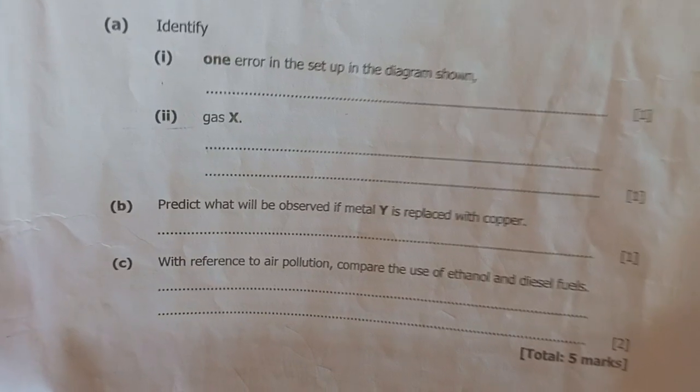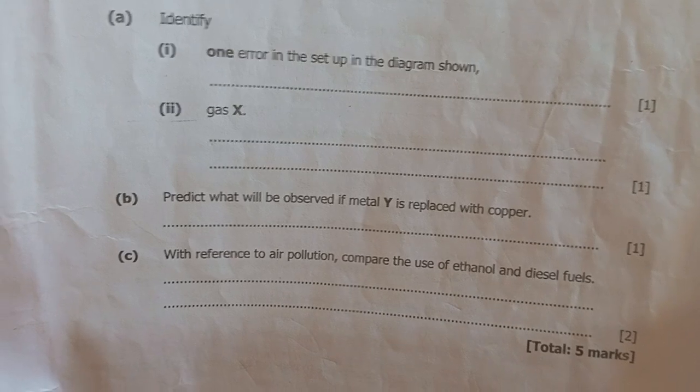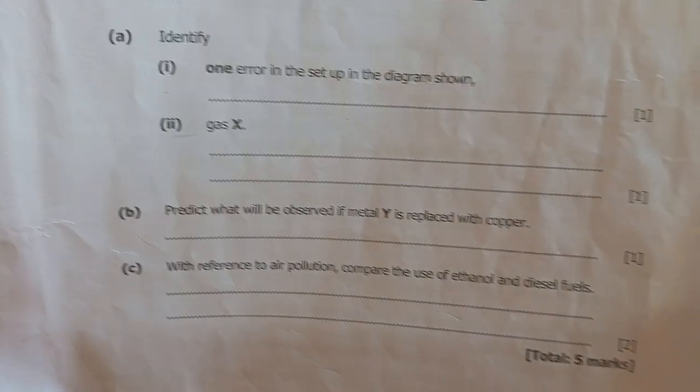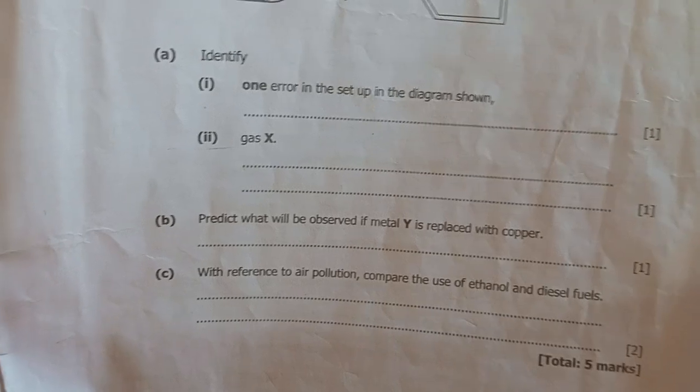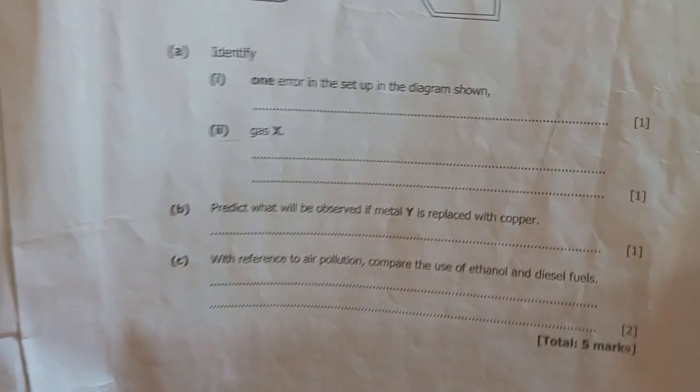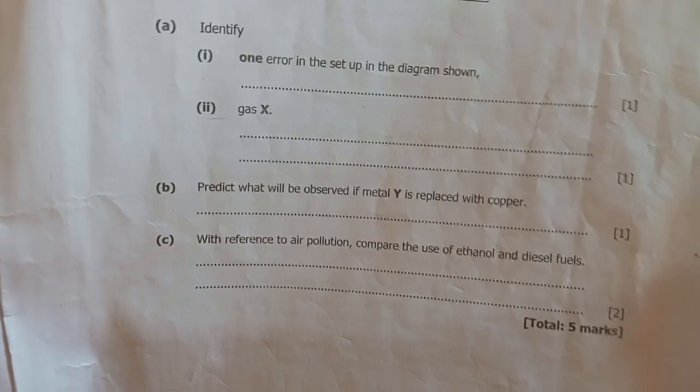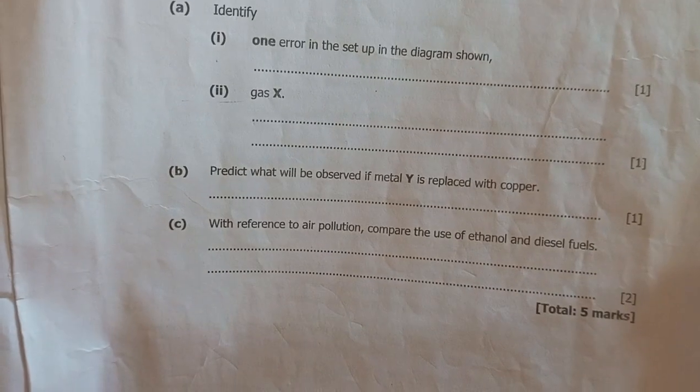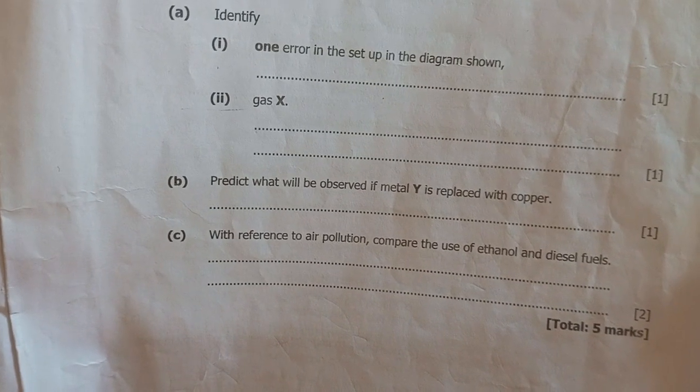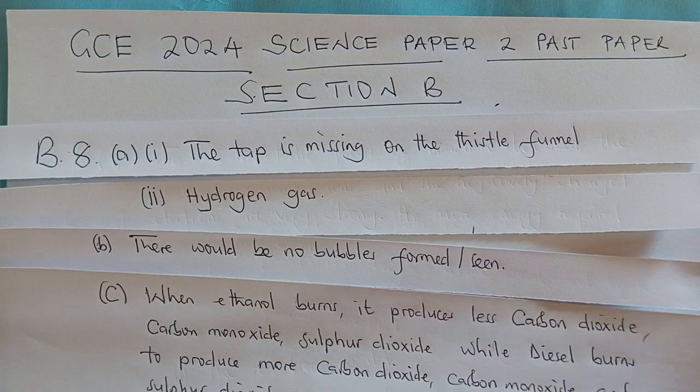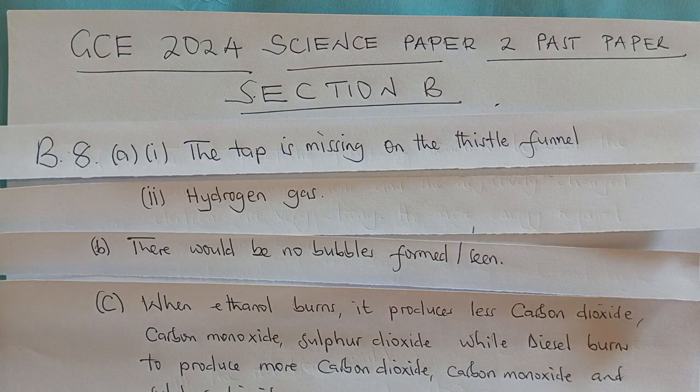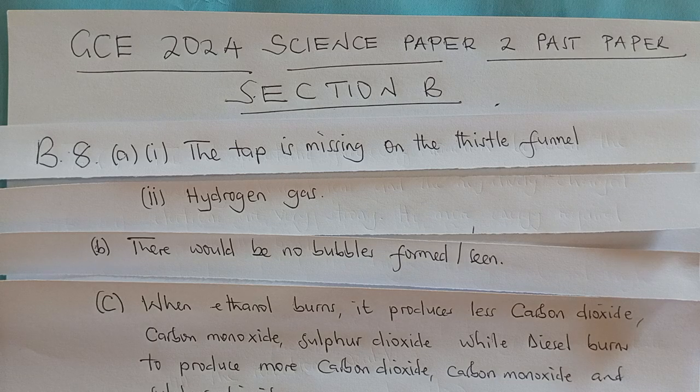whenever ethanol burns, ethanol produces less carbon dioxide, less carbon monoxide, and also some elements of sulfur dioxide. But diesel, when it burns, produces all those that ethanol does not produce more. So that would be the difference when it comes to the use of these fuels with reference to air pollution. So diesel pollutes air more than ethanol when used as fuels.